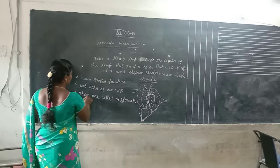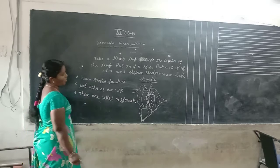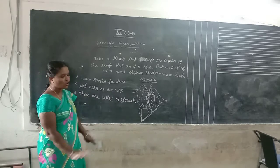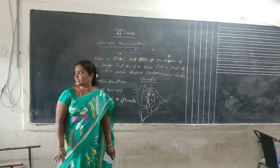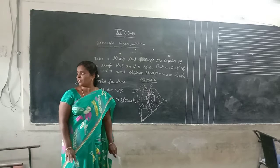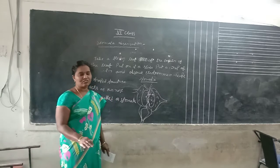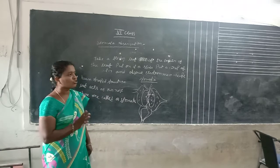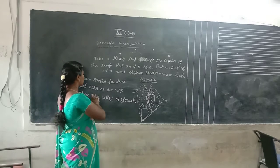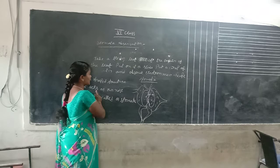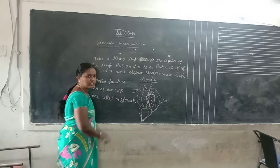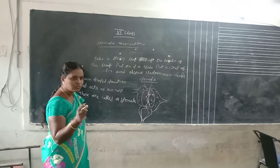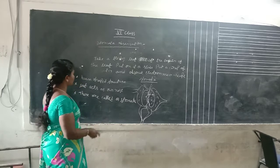What is the importance of the stomata? The stomata are present on the upper surface and lower surface of the leaf. The stomata act as a bean-shaped structure.